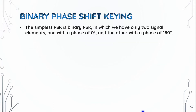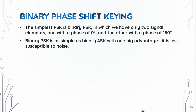The simplest PSK is Binary PSK (BPSK), in which we have only two signal elements: one with a phase of 0 degrees and the other with a phase of 180 degrees. Binary PSK is as simple as binary ASK, with one big advantage — it is less susceptible to noise.